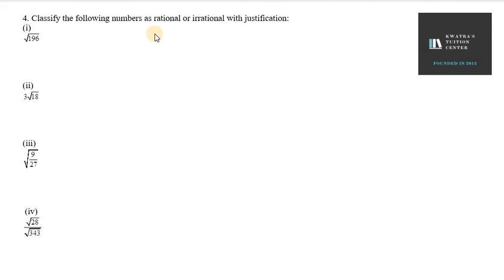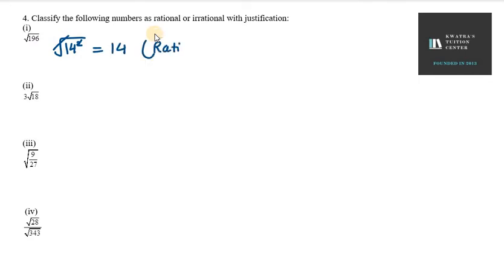The first number we have is √196. We can write 196 as 14². So the square root cancels and we get 14. And 14 is a rational number.